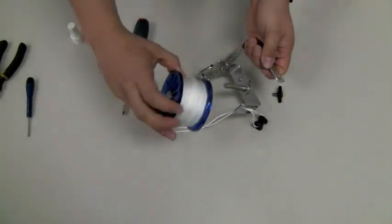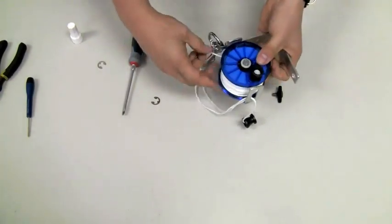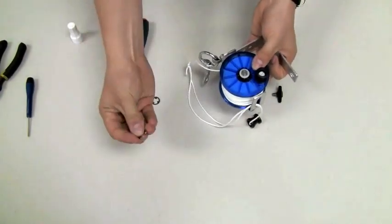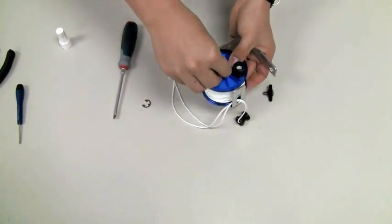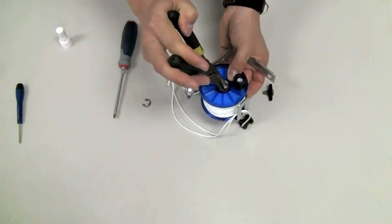Next, take the spool, replace it on the shaft, and then take the C-clip, and using the pliers, snap it back in place.